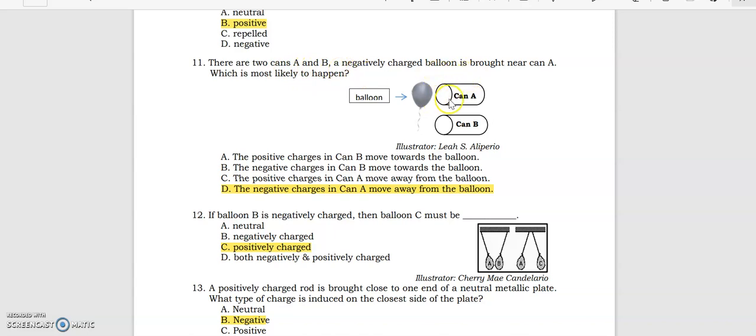There are two cans A and B. A negatively charged balloon is brought near can A. Which is most likely to happen? The negative charges in can A move away from the balloon.